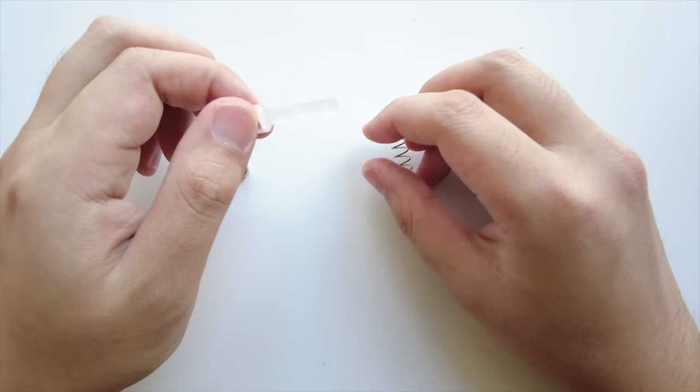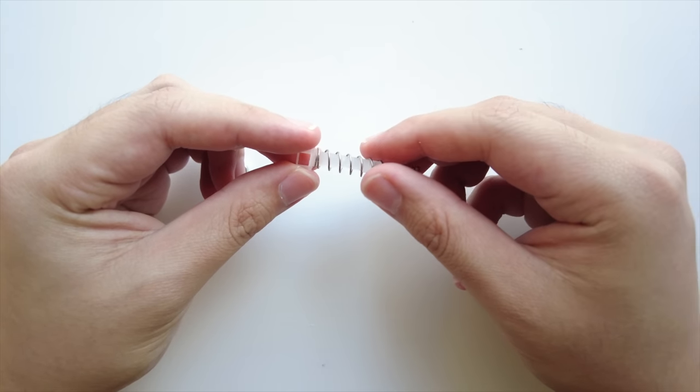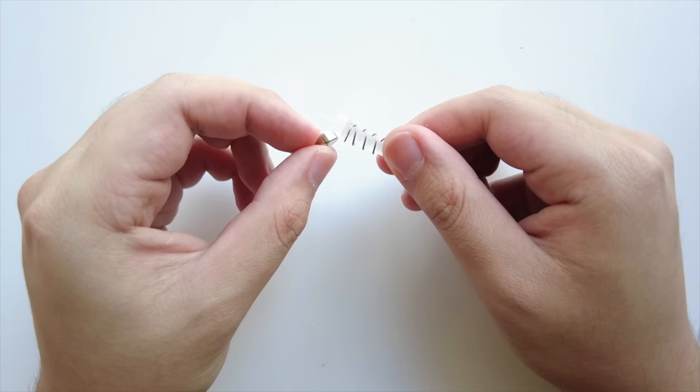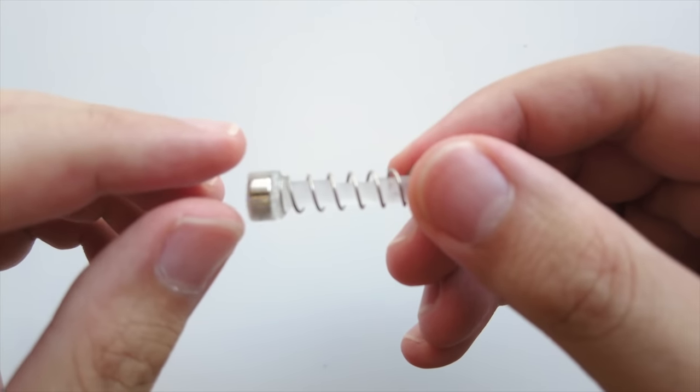And now we'll be putting together projectiles. It's very simple, just like the past videos with the spring here, and then the magnet will go inside the slot here, just like that. This is what you'll have.